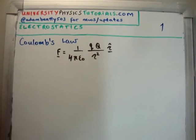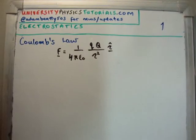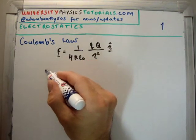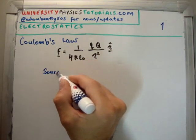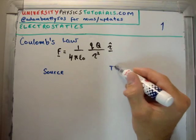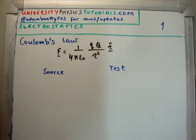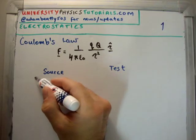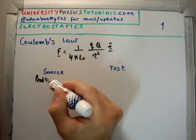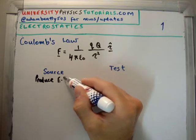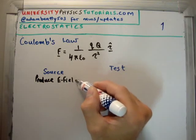So in electrostatics, we're dealing with the following. We have two different types of charges. We have source charges and we have test charges. So how do we define what the difference is?